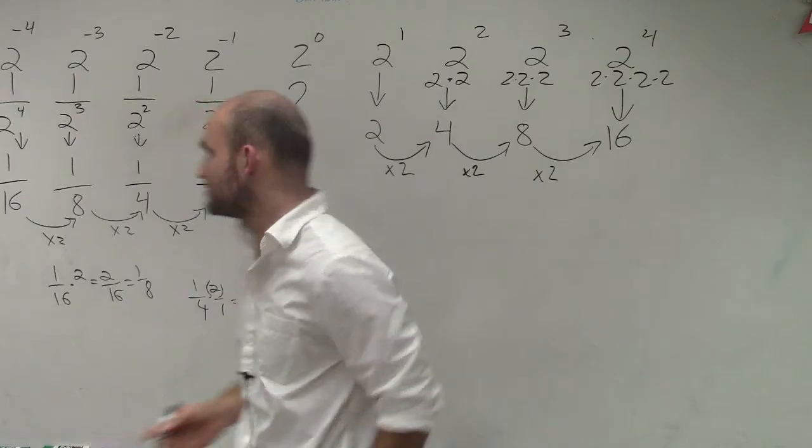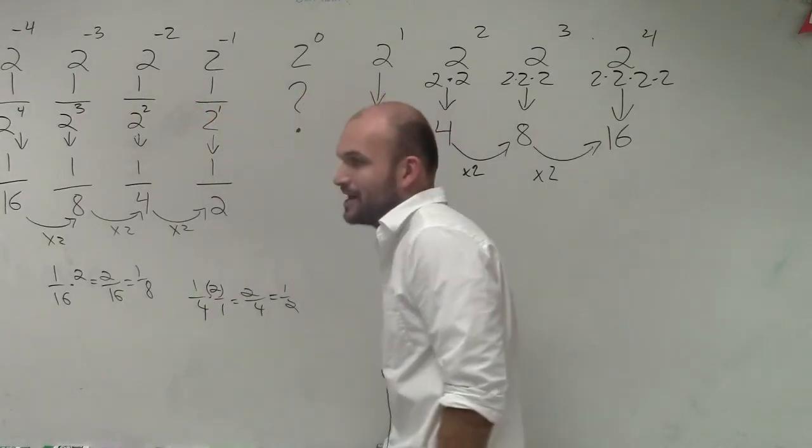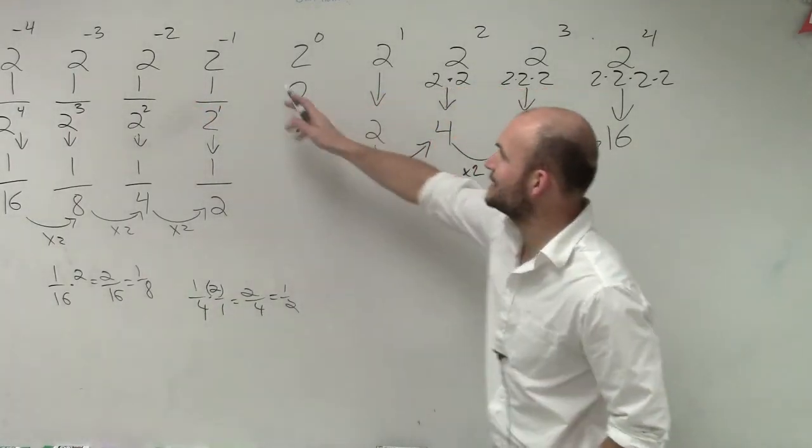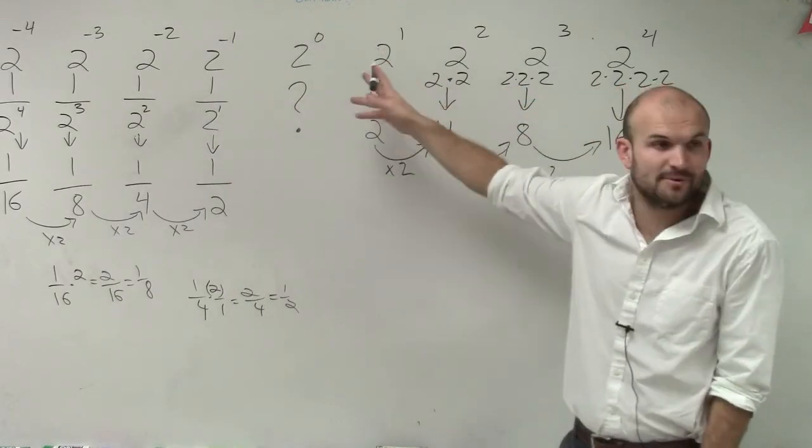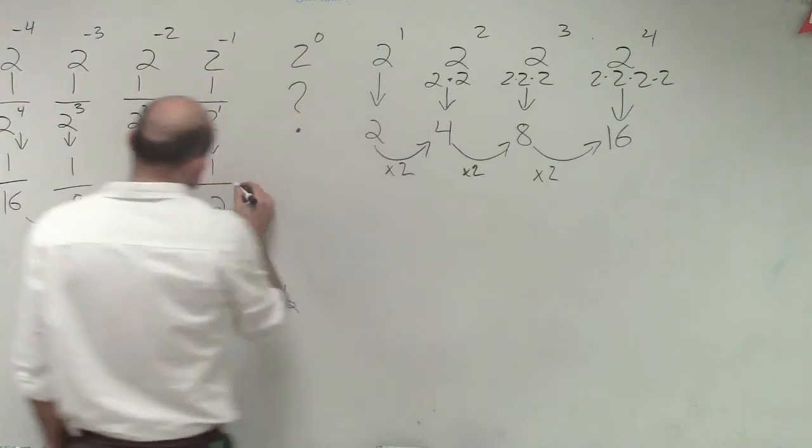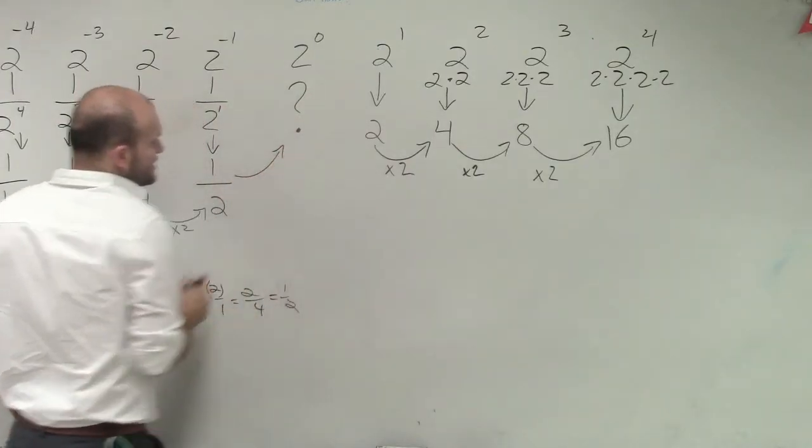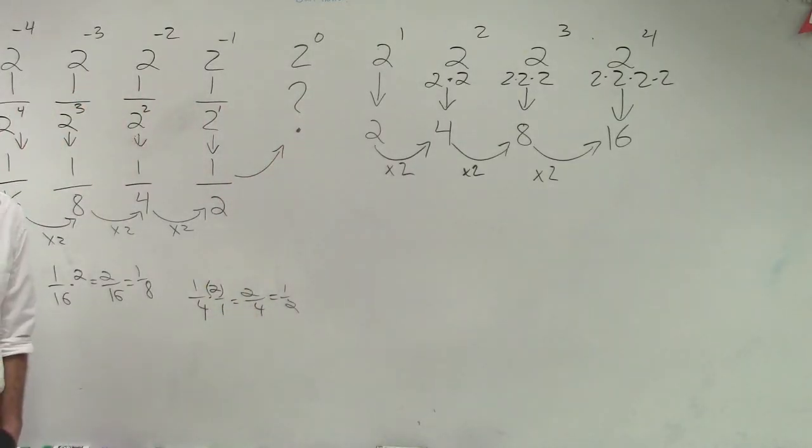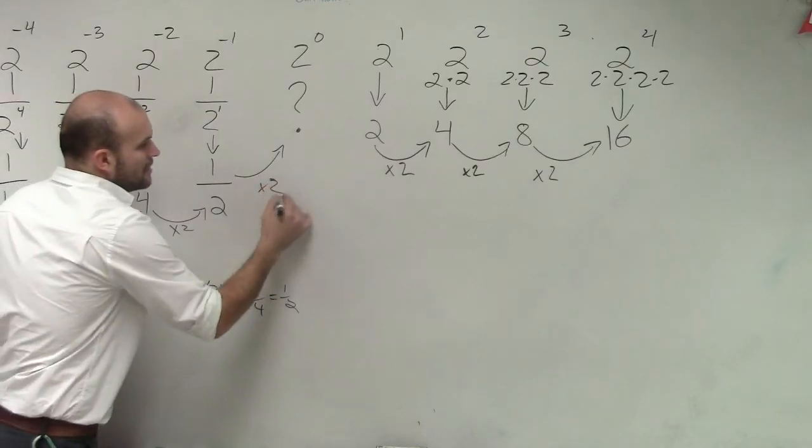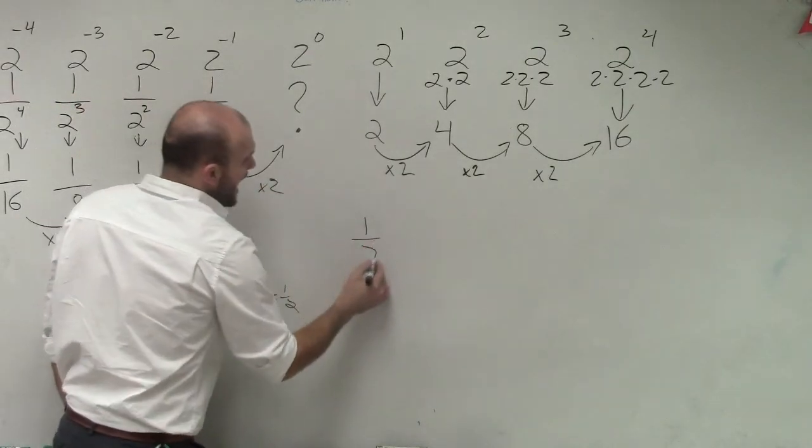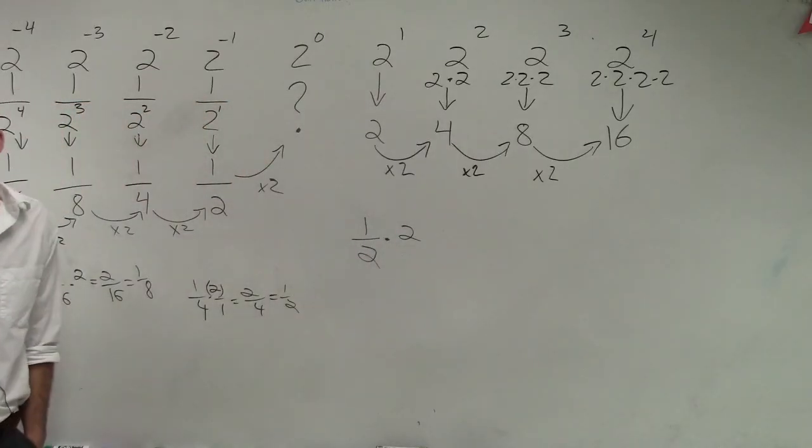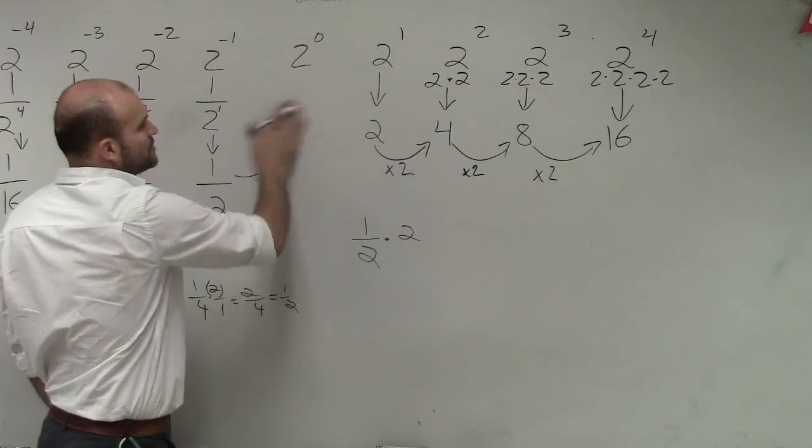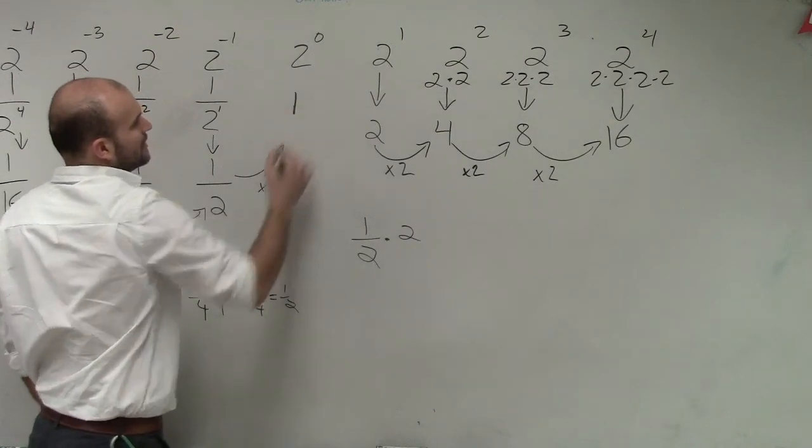If I'm looking for this next answer, if we're saying 2 to the negative second, negative first, then the next point up is 0, and then we go to the first. So what do I have to do to get to this next value? Multiply by 2. If I do 1 half times 2, what is that going to give me? 1. So 2 to the 0 power equals 1.